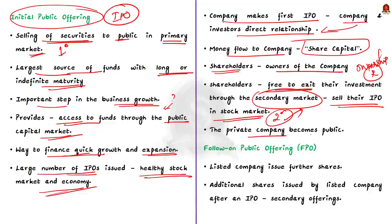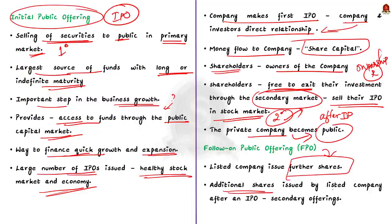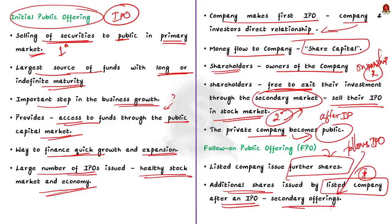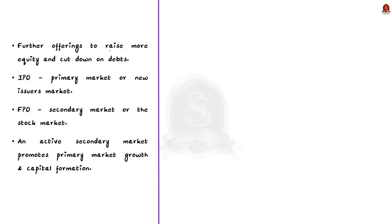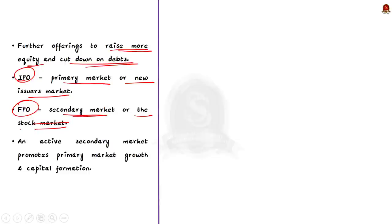After a private company issues an IPO and becomes public, through a follow-on public offering it can issue further shares. Follow-on public offer refers to additional shares issued by a listed company after making an initial public offer. Since the FPO follows an IPO, they are also known as secondary offerings. Companies may choose to make further offerings to raise more equity and cut down on their debts. Note that IPO is made in the primary market while FPO is made in the secondary market or the stock market. An active secondary market promotes the growth of the primary market and capital formation.